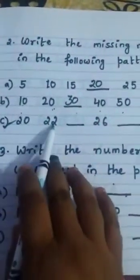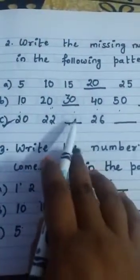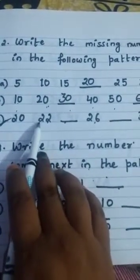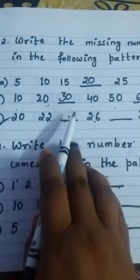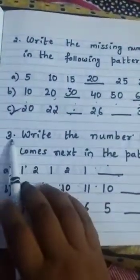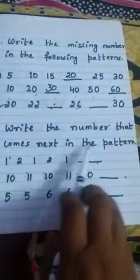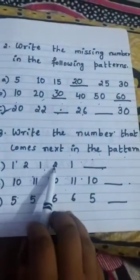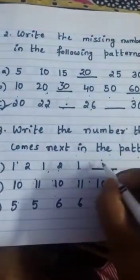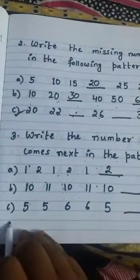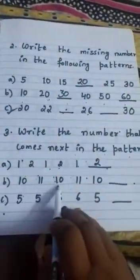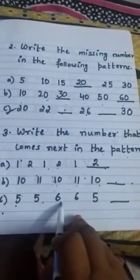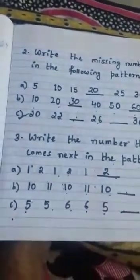Part C is your homework — you can do it yourself. 20, 22, then 24, 26 — two numbers are skipped each time, so you can follow the pattern and write the answer. Question 3C: write the numbers that come next. For example, 1, 2, 1, 2, 1 — obviously the answer is 2. Parts B and C are homework: 10, 11, 10, 11, 10 gives 11; and 5, 5, 6, 6, 5 gives 5.